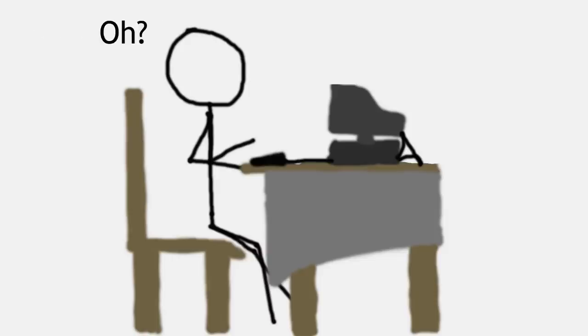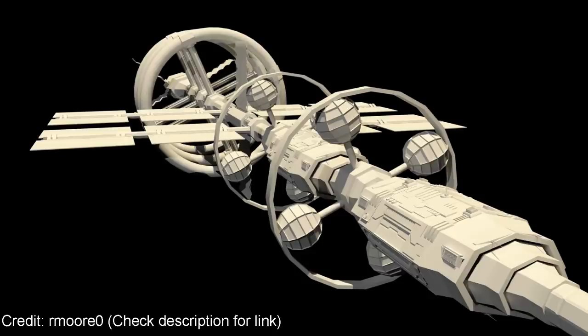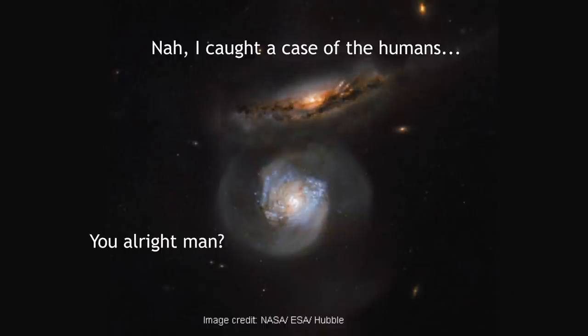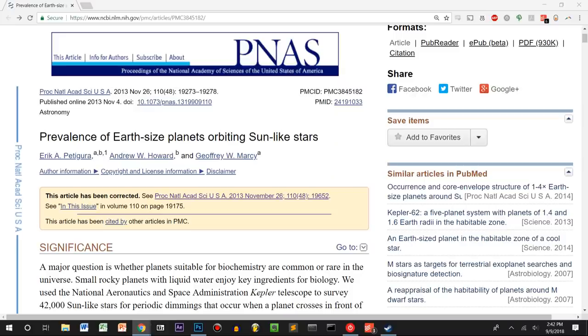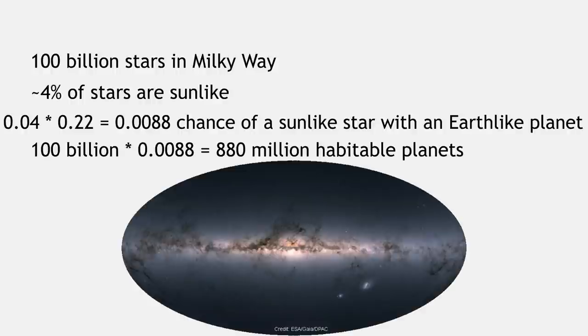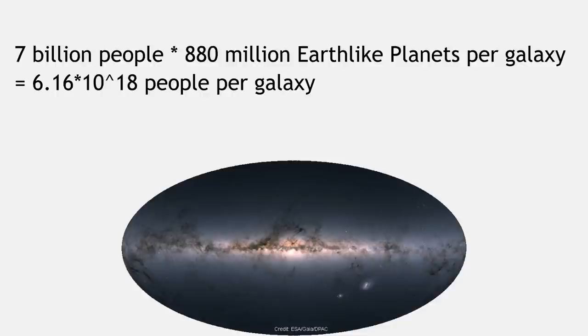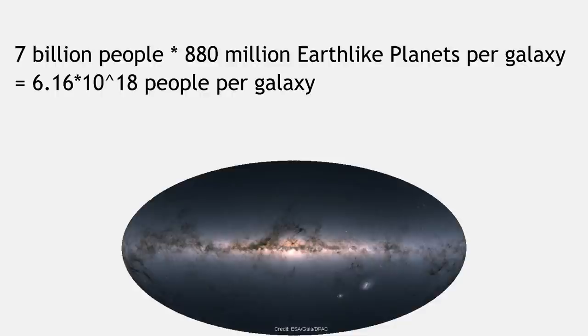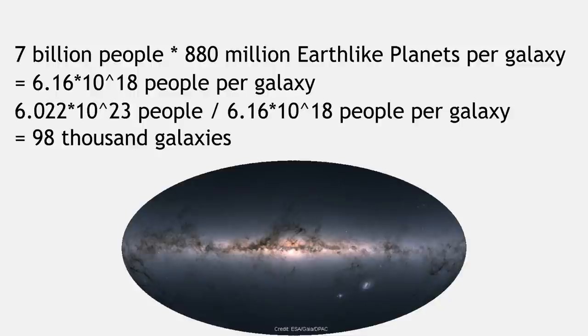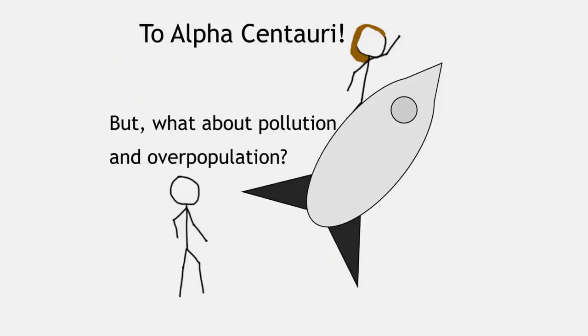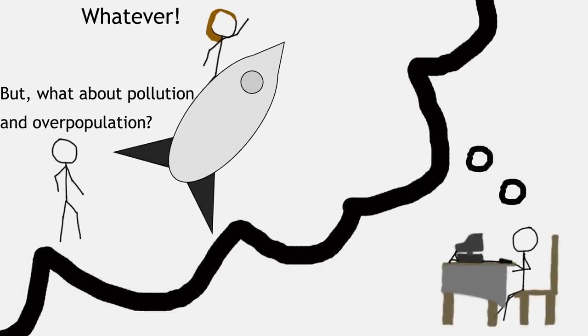All is not lost, however. We may one day have the technology required to populate other planets, and spread across the universe like a virus destroying its host. According to research headed by Eric Pettigura, 22% of sun-like stars harbor Earth-like planets that could, with a bit of work, sustain us. This means that, conservatively, there are 880 million solar systems with Earth-like planets in the Milky Way. If we were to infest all of them with 7 billion people each, we could support 6.16 times 10 to the 18th people — an unfathomably large number — but we would still need another 100,000 galaxies worth of stars in order to sustain everyone. We still have a lot of problems to figure out before we colonize, and hopefully we can figure them out before we destroy 100,000 galaxies, but I'll leave that to the sci-fi writers.